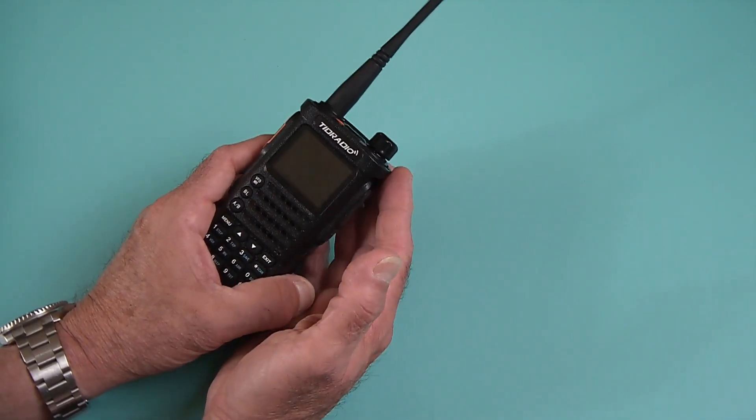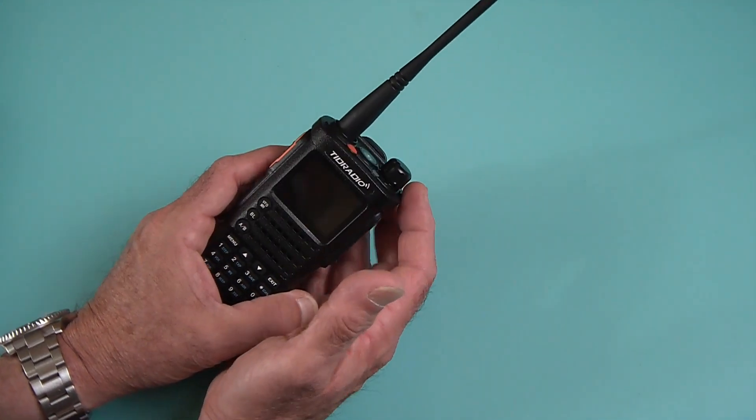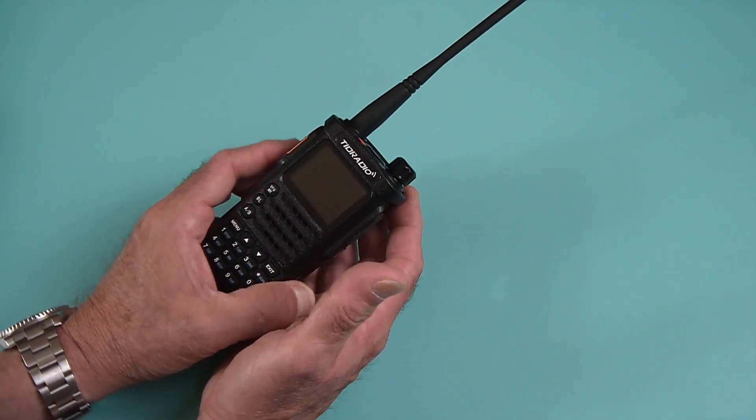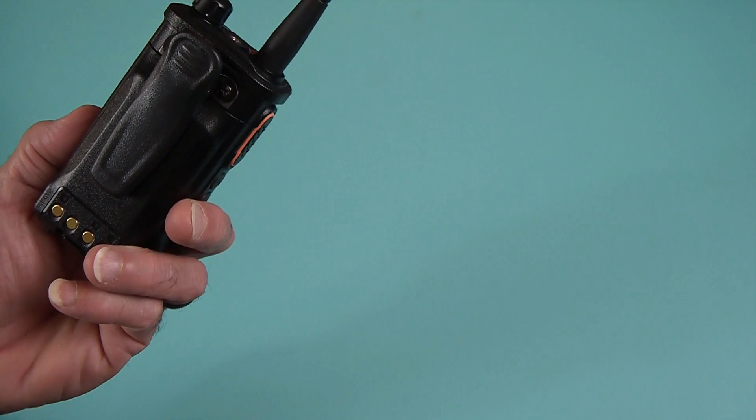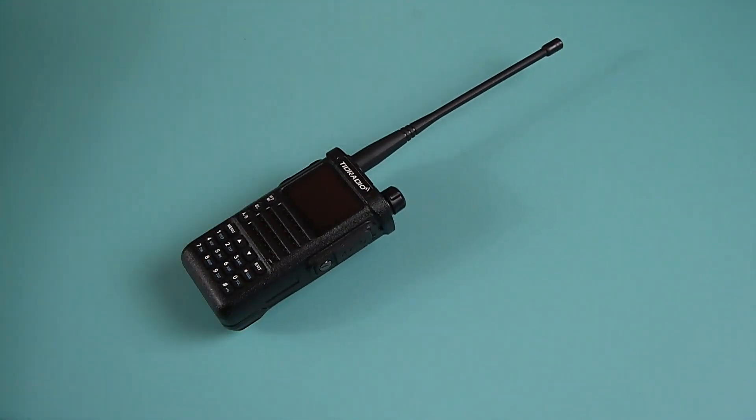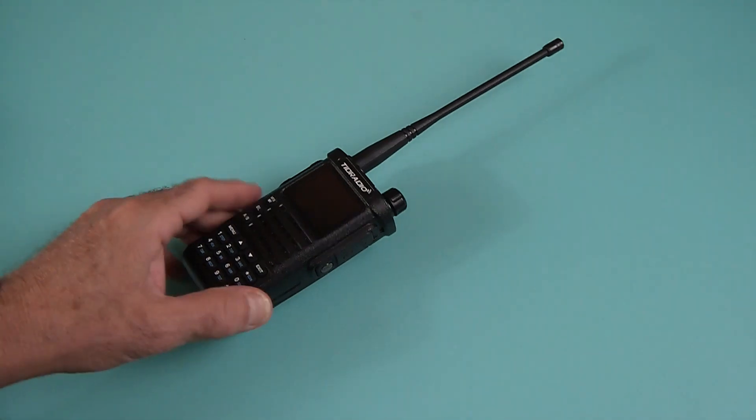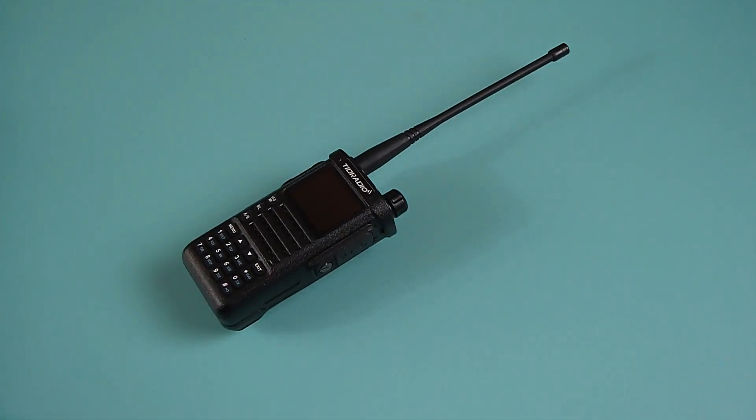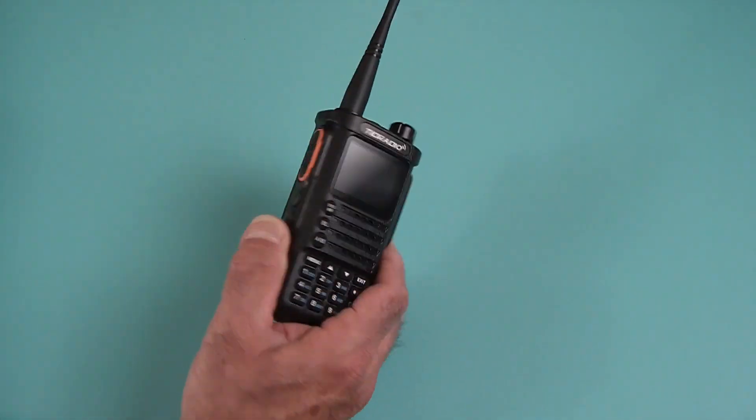This was sent to me by TID radio. This is the GMRS version, so I measured it at GMRS on my Shurcom SW33 plus and this thing transmits at 4.66 watts. Not bad power, it's supposed to be a 5 watt GMRS radio so it does that without any issues.